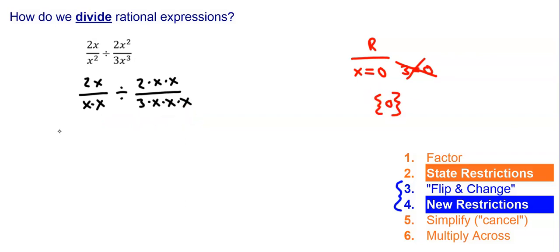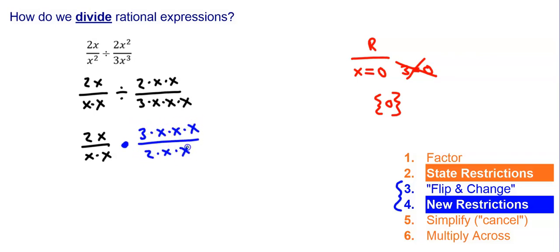We did both of those steps when we did multiplying rational expressions. Here's the new part: I'm going to flip the second expression and change it to multiplying. So my first expression stays the same — I have two times x over x times x. I change the division to multiplying, and I flip the second fraction upside down: so I have three times x times x times x all over two times x times x. Now I have to state new restrictions because this is a new denominator.